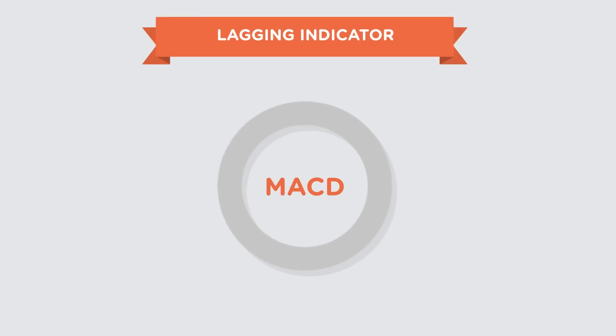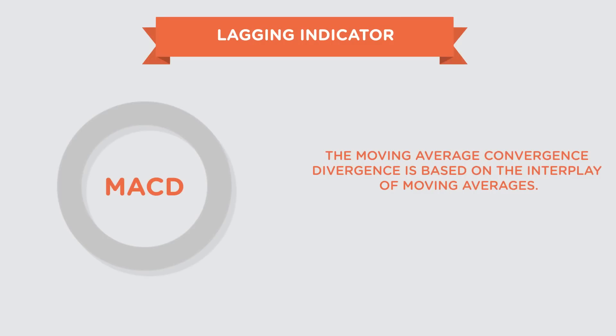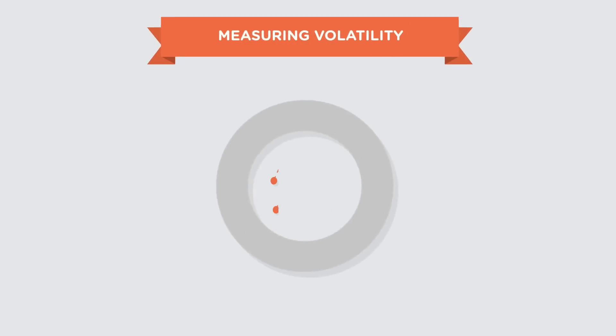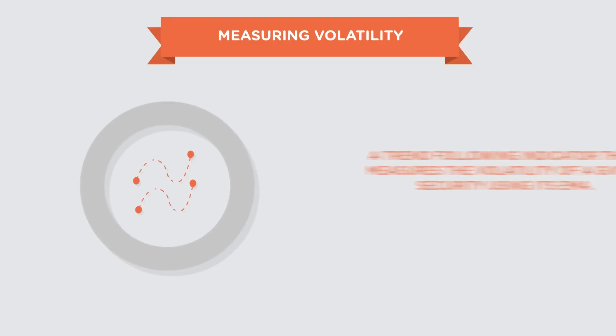Hi there! In the previous lesson we learnt about the MACD or the moving average convergence divergence and we also learnt a strategy to trade using it. In this lesson we're going to learn about Bollinger Bands.